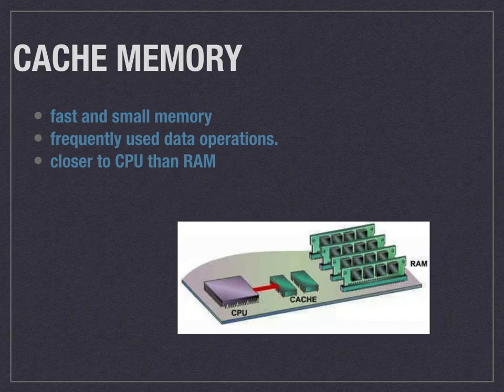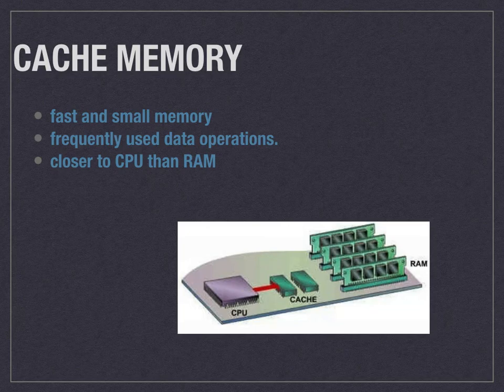That is the same concept we apply for cache memory. We know RAM is the fastest memory because it is closer to the processor. To improve speed further, we introduce cache memory in between the RAM and the processor for storing frequently used operations. If the processor wants to perform an operation, it won't have to access the RAM — it can directly get it from the cache memory, which saves a lot of memory access time.